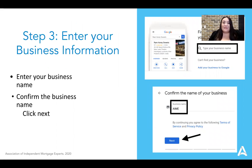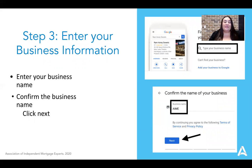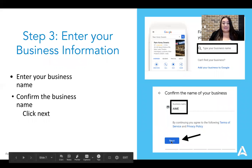Number three, enter your business information. You want to make sure that when you're typing in your name, first and foremost, you are using proper capitalization and proper spelling. Nobody's going to spell check this for you, so you want to make sure it is absolutely accurate and really professional, because this is the very first thing that your customers are going to see. Once you've typed in the name of your business, just click Next.